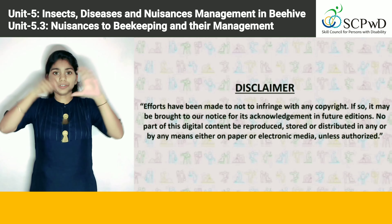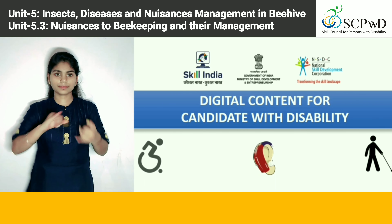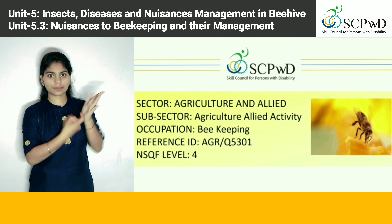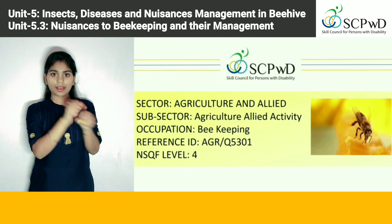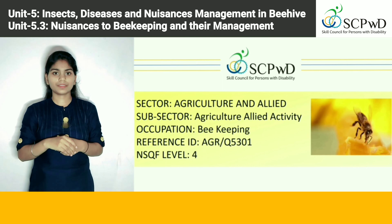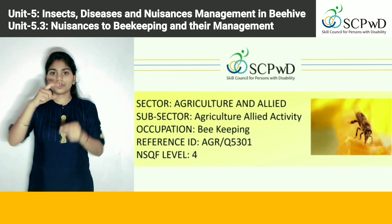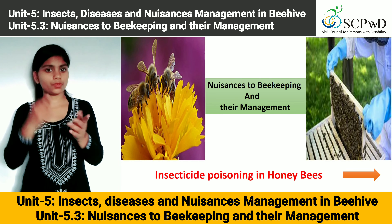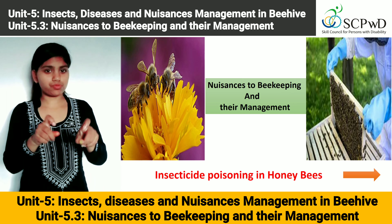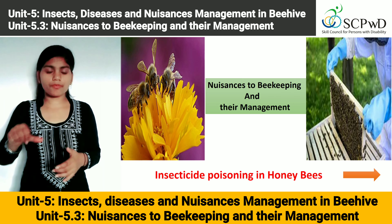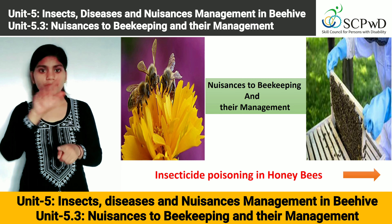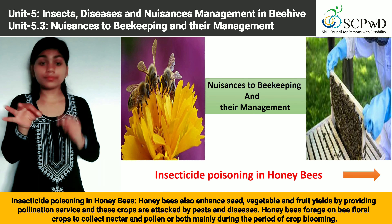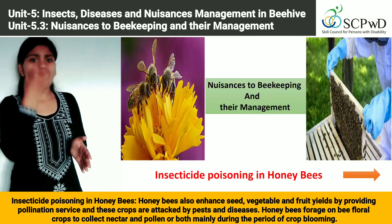Digital Content for Candidate with Disability — Agriculture and Allied Activity Occupation: Beekeeping, Reference ID AGR/Q5301, NSQF Level 4. Unit 5: Insects, Diseases and Nuisances Management in Beehive. Unit 5.3: Nuisances to beekeeping and their management — Insecticide Poisoning in Honeybees.